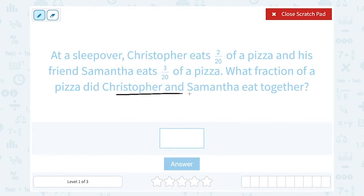Well if I want to know the total amount that they both eat, I would need to add those two fractions together. So I'm going to say 2 out of 20 plus 3 out of 20, and I'm going to add that up.